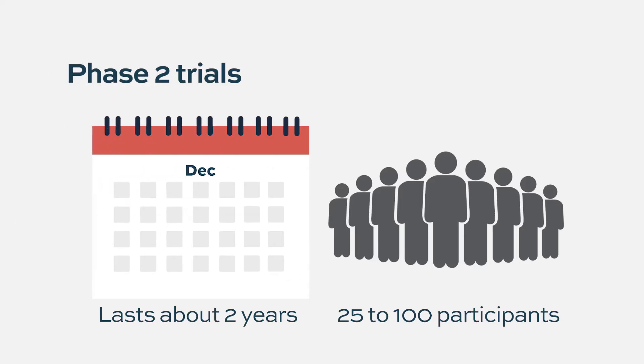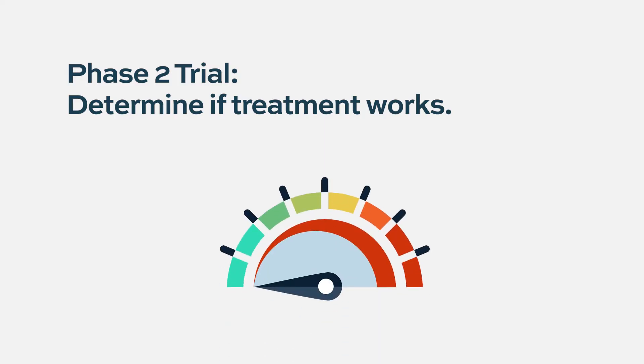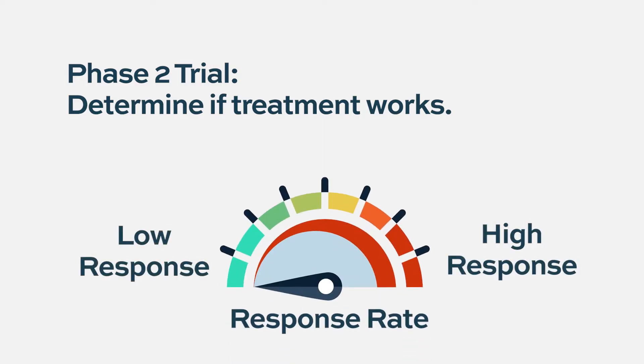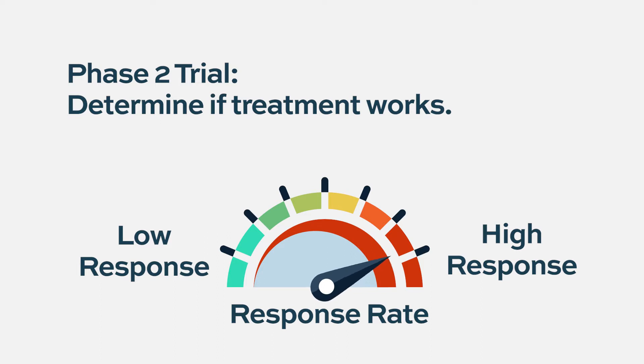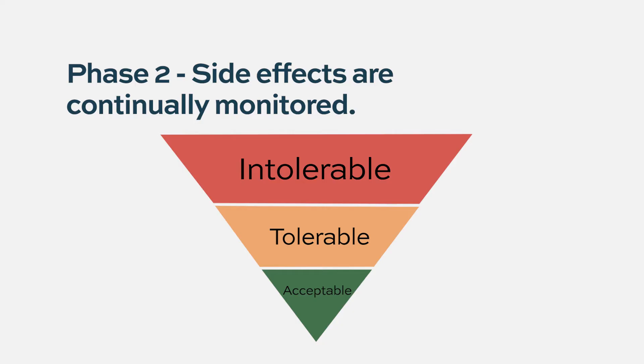The goal of phase two trials is really to identify a therapeutic dose regimen to take into further phases of trials. A phase two study's purpose is to understand what is the efficacy, or what is the benefit, of the medication. In myeloma, we ask: what is the response rate to this medication, and what is the likelihood that this medication — whether given alone or in combination — is beneficial to an individual patient?